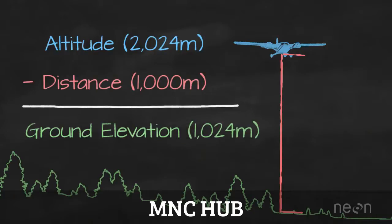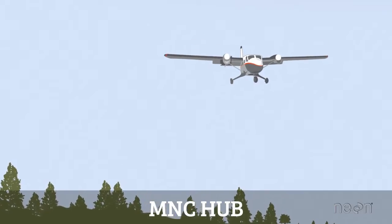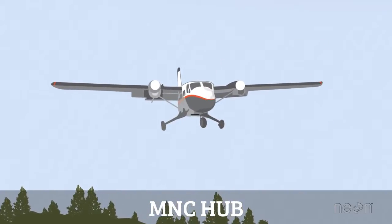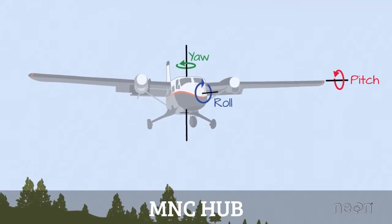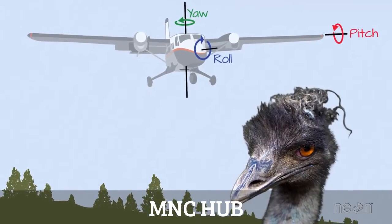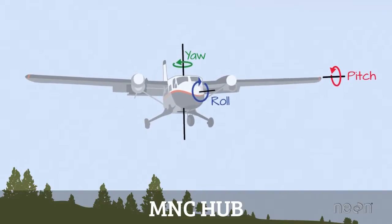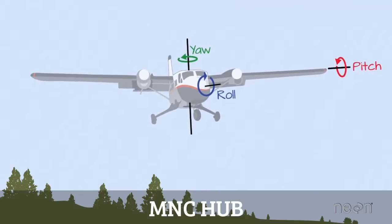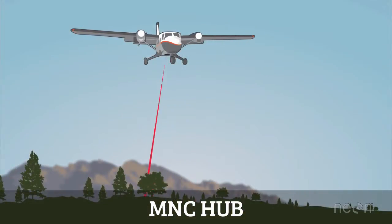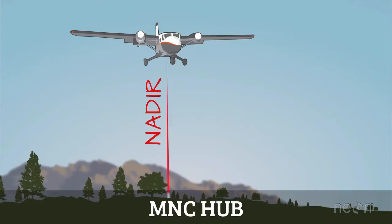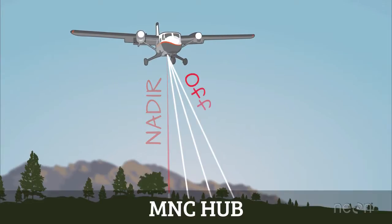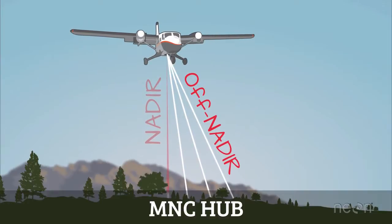There are two more things a LIDAR system must consider when calculating height. First, the plane rocks in the sky due to turbulence, and these movements are recorded by the IMU so they can be accounted for in height calculations. Also, an airborne system scans the Earth from side to side, so while some light pulses travel vertically — directly at nadir — most pulses leave the plane at an angle, or off nadir. The system must account for pulse angle when calculating elevation.